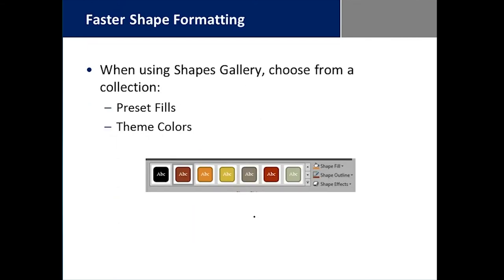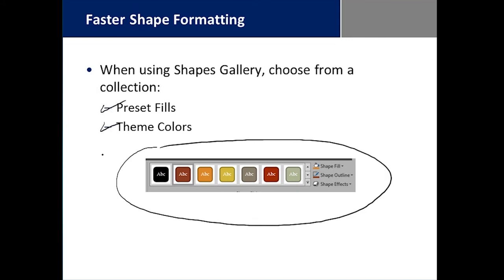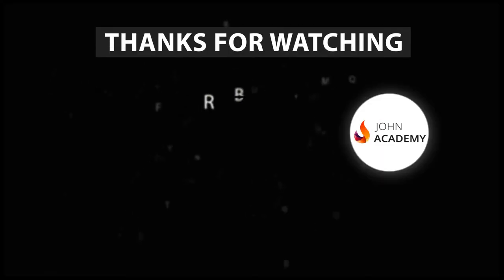In Word, we have the Shapes Gallery, and when we choose a shape from the collection, we have a bunch of preset fills and theme colors to work within. The point is to be able to format shapes much faster than previously and have them all match the color combinations in the color palette that's already been chosen as a default.